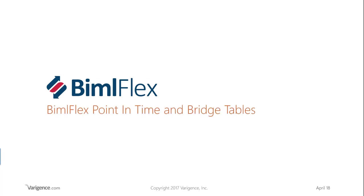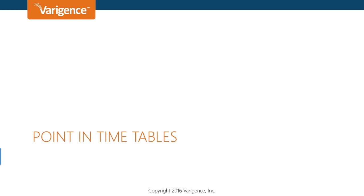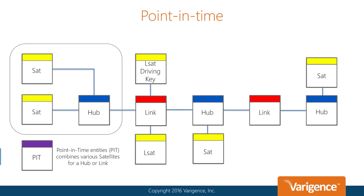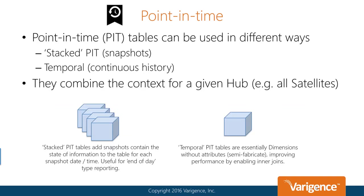Point-in-time tables. The point-in-time table is a helper construct that joins a hub and any or all of its attached satellites into a timeline across all time slices. This table makes it easy to query a core business concept and get all attributes relevant for a given point-in-time. Point-in-time tables are normally created so that all relevant data attached to the core business concept can be related to an event with a specific event date time.